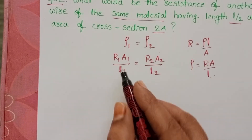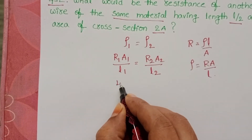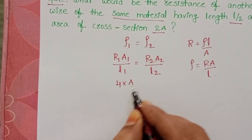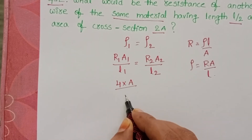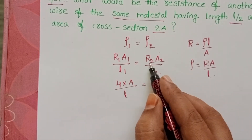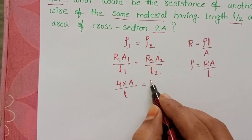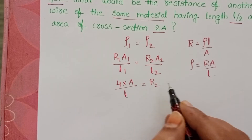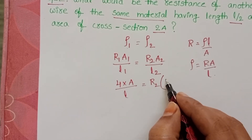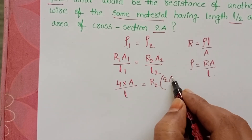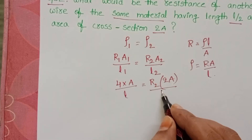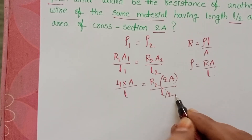The resistance of the first wire is 4 ohm, with area of cross section A and length L. We have to find the resistance of the second wire, which has area of cross section 2A and length L/2.